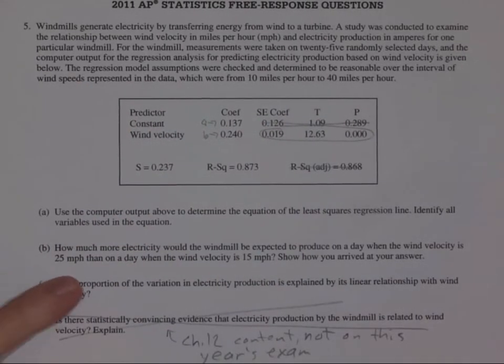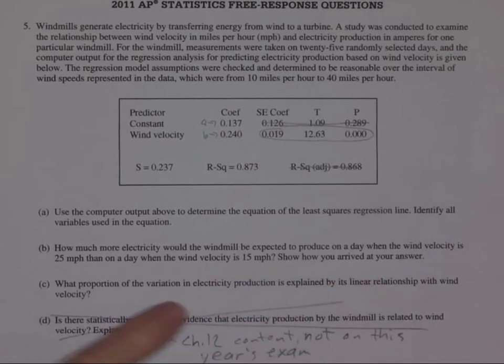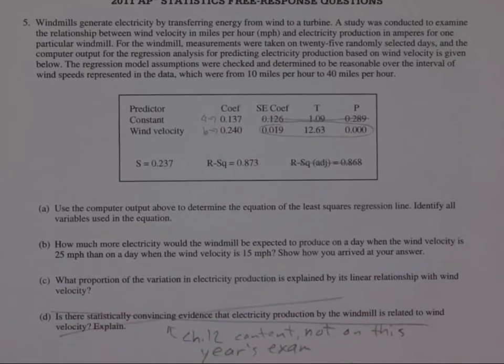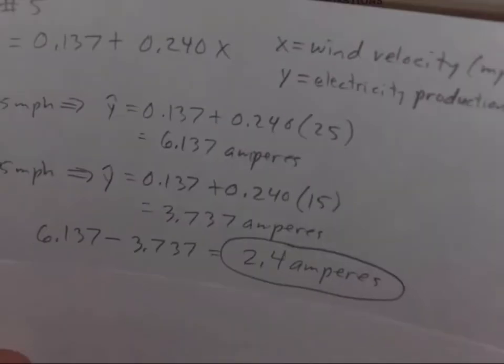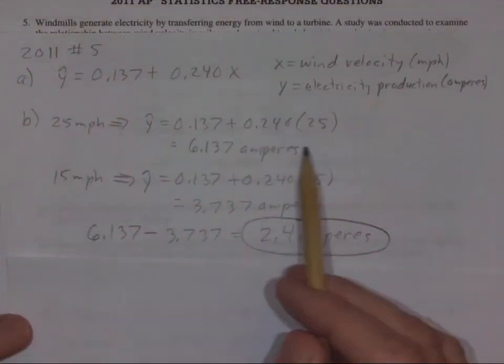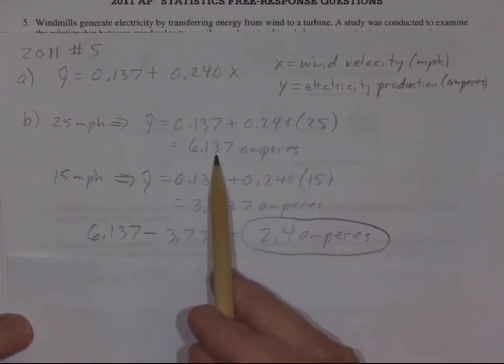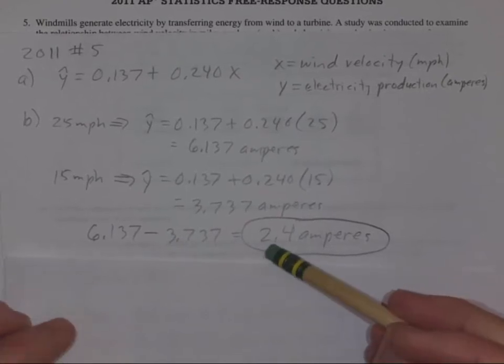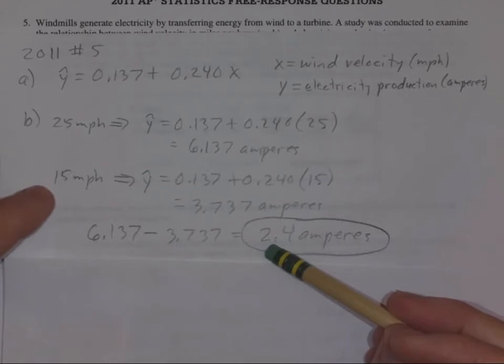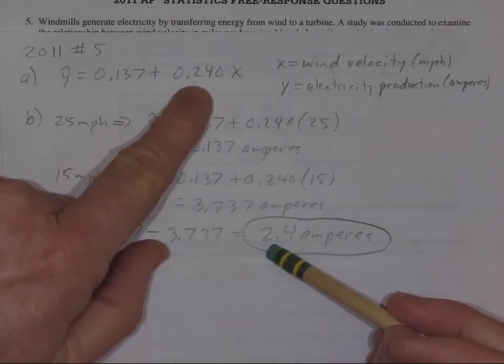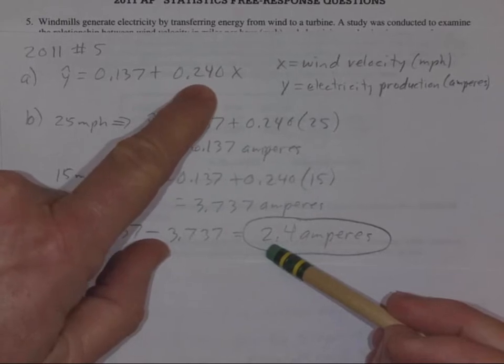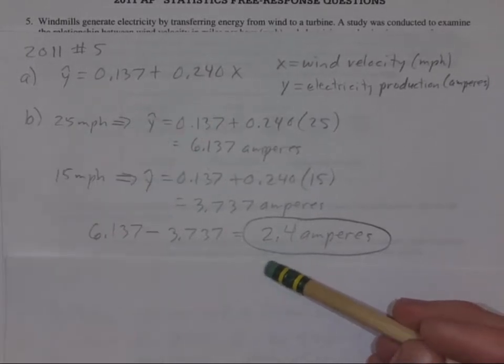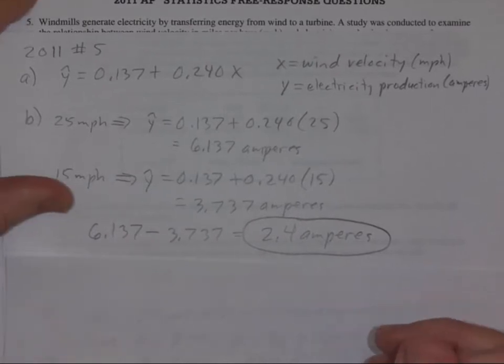For part B, it says how much more electricity would the windmill be expected to produce on a day when the wind velocity is 25 miles per hour versus 15? So you can just plug in 25 and 15. You plug in 25 into our equation, and we would get 6.137 amperes. Then plug in 15, and you would get that. So you subtract the two, and that would be 2.4. That is what we're predicting. The other way you could get this is you could realize there's an increase of 10, and when there's an increase of 10, we're expecting to go up 10 slopes. Just multiply the slope by 10. That's the other way you could have done this problem, but this was the most popular way, just to plug in 15 and 25.